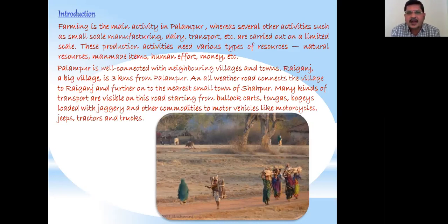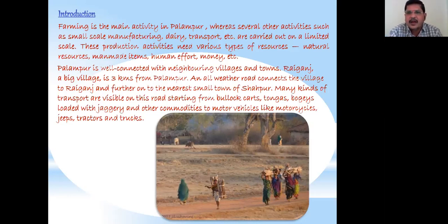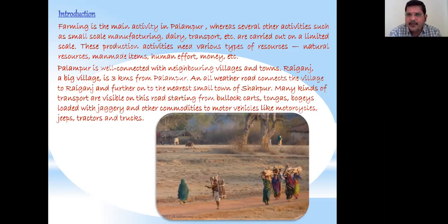Many kinds of transport are visible on this road, starting from bullock carts, tongas, and buggies loaded with jaggery and other commodities, to motor vehicles like motorcycles, jeeps, tractors, and trucks. Nowadays when we go to village areas we still see these means of transport, though tongas and buggies are very few.